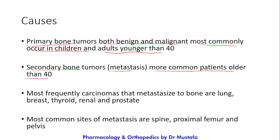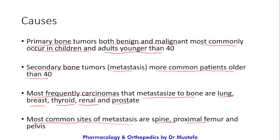The most frequent carcinomas that metastasize to bone are lung (number one), followed by breast, thyroid, renal, and prostate. The most common sites of metastasis are the spine, proximal femur, and pelvis.